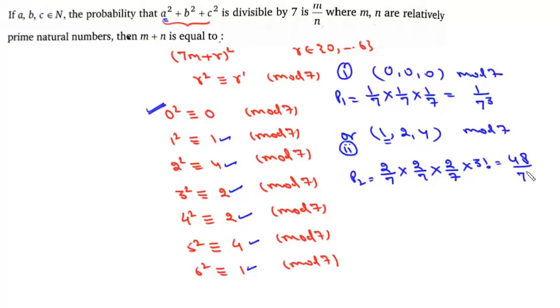So it will be 48/7³. The required probability is the sum of these two, which is 49/7³, which is nothing but 1/7.